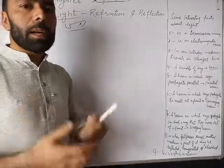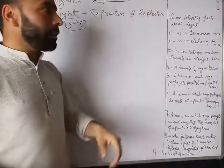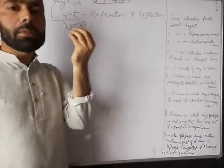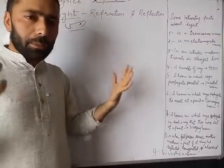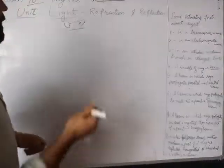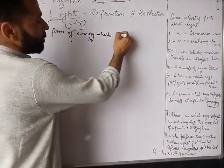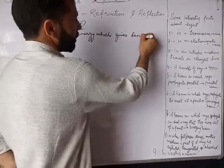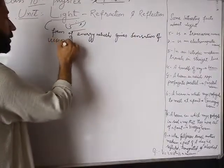Just as we read that heat is a form of energy that gives us a sensation of warmth, similarly we say that light is also a form of energy that gives us the sensation of vision. Just as sound is also a form of energy — among the different types of energy, light is one type. So light in simple words can be defined as a form of energy which gives sensation of sight, or sensation of vision. You should write that down.